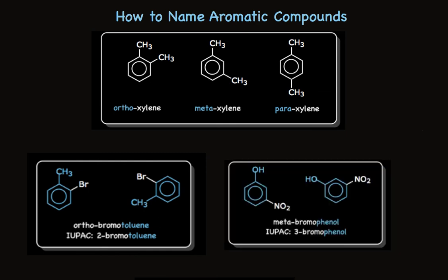This is meta-bromophenol. We've noticed there's a hydroxyl group attached to the benzene ring, making this a phenol — a substituted phenol. We call it meta-bromophenol because there's one carbon between the two substituents. Or in the IUPAC system, we call it 3-bromophenol. We number with 1 where the hydroxyl group is — that's understood and we don't say it — then go to carbon 2 and around to carbon 3 where the bromo group is.